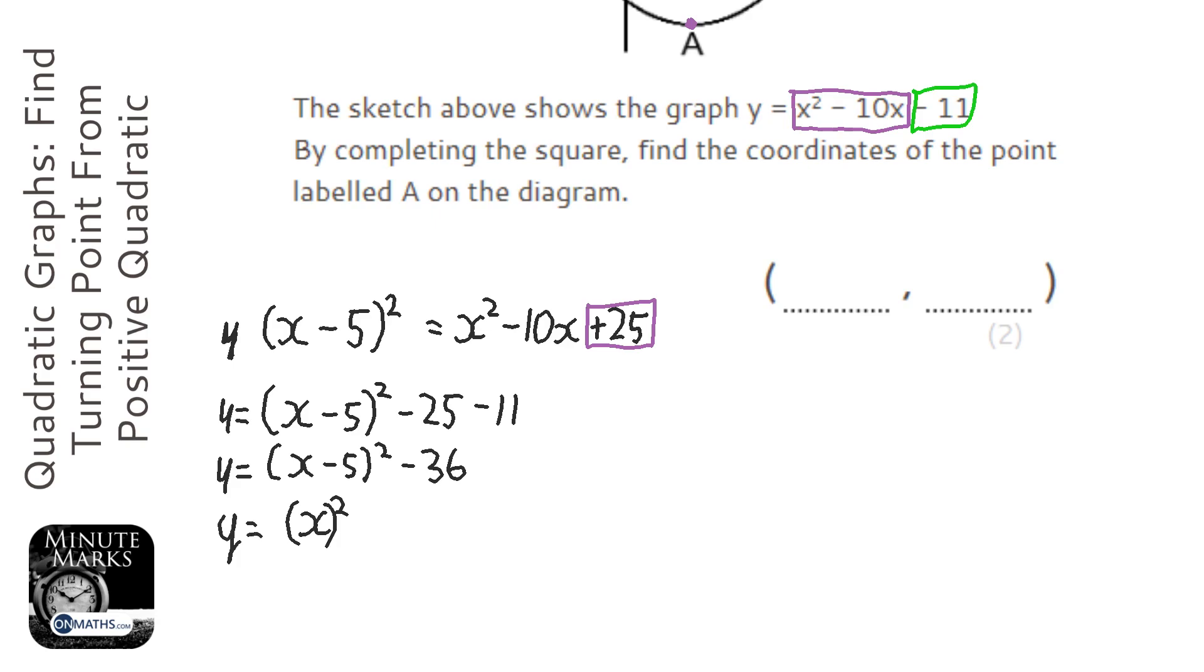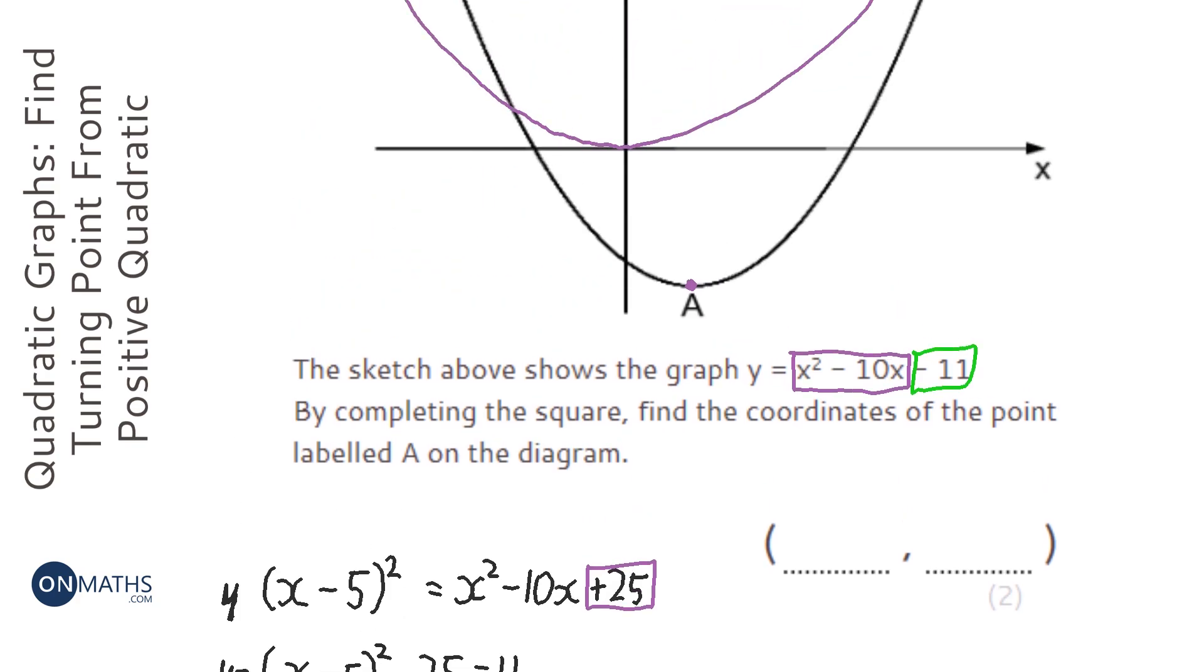Well you notice that inside the squared we're taking away 5. Now if you know anything about graphic transformations, if you are minusing something within the function, weirdly it doesn't go left 5, it goes right 5. So the minimum point on our y equals x squared is at 0, but this is moving it to the right 5.